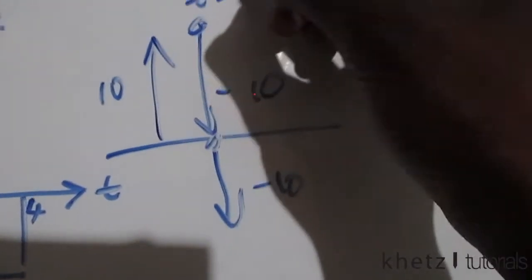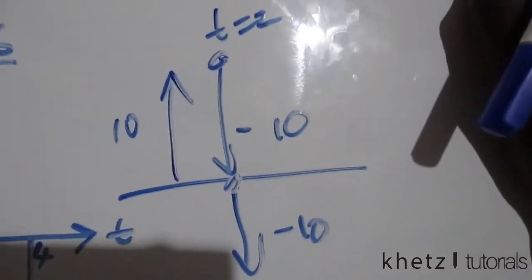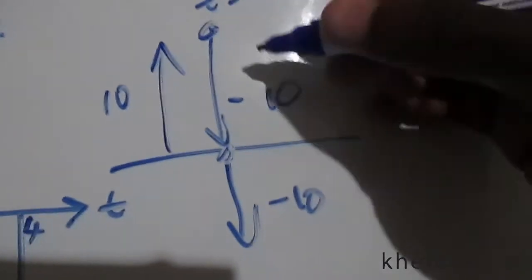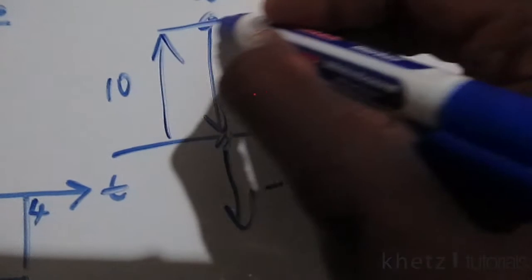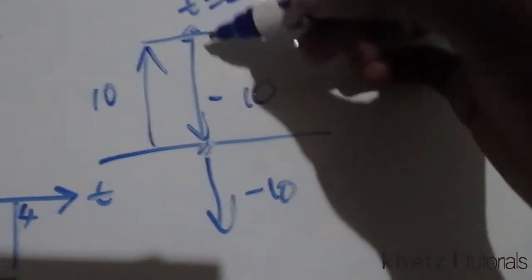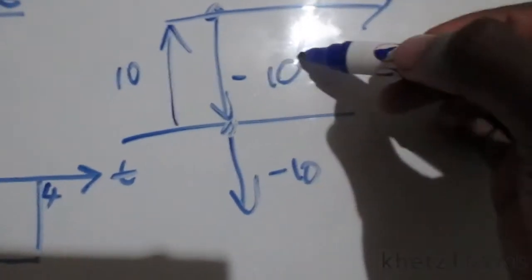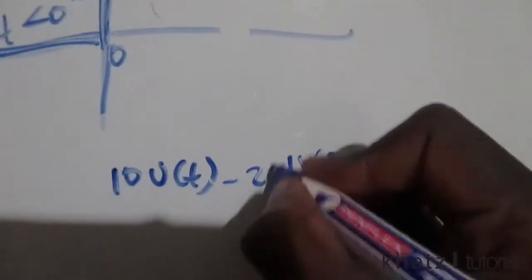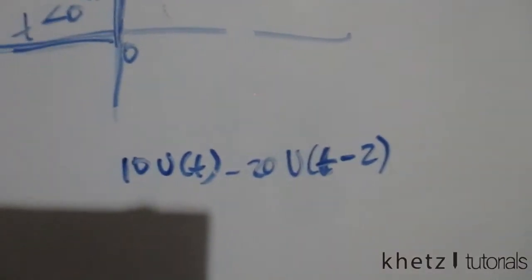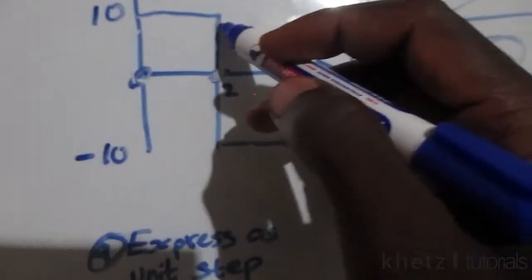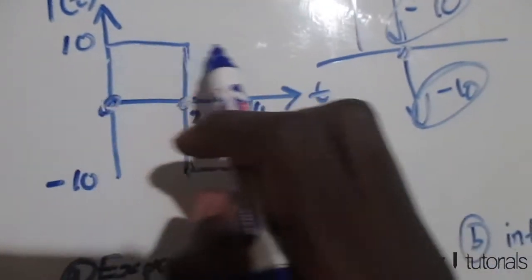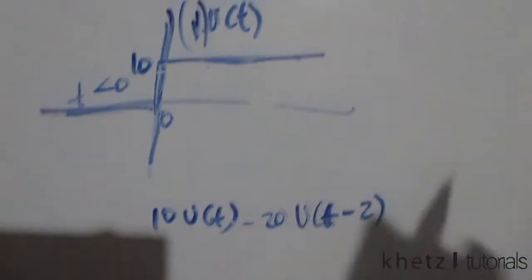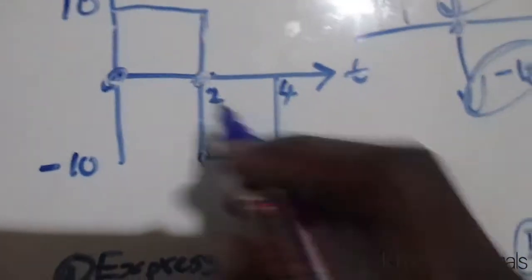At t=2 what actually happened is a cancellation. We cancelled the effect of the infinite 10-amplitude by subtracting 20, which is the sum of -10 and -10. This gets us to -10, so we actually have -20 at that point, showing the effect of disturbing the infinite 10 we expected from 10·u(t).